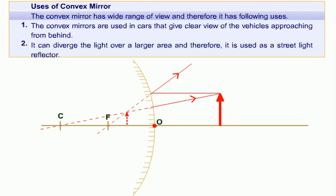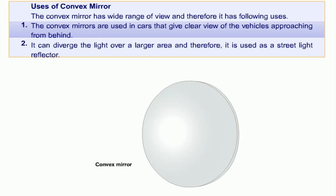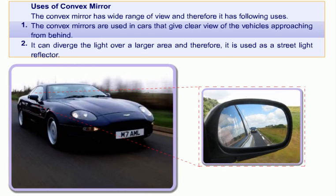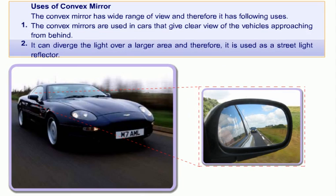The convex mirror has a wide range of view and therefore has the following uses. Convex mirrors are used in cars to give a clear view of the vehicles approaching from behind. They can diverge the light over a larger area and therefore are used as street light reflectors.